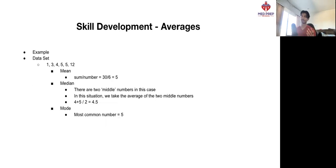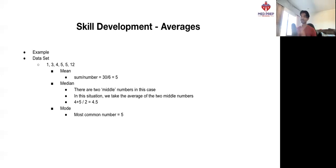So let's have a look at a set of numbers and see what our mean, median, and mode would be. So: 1, 3, 4, 5, 5, 12 — that's our data set. What would the mean be? Well, we get the sum of all of those numbers, which happens to be 30 in this case, divide by the total number of values that we have, which is 6. So our mean happens to be 5.